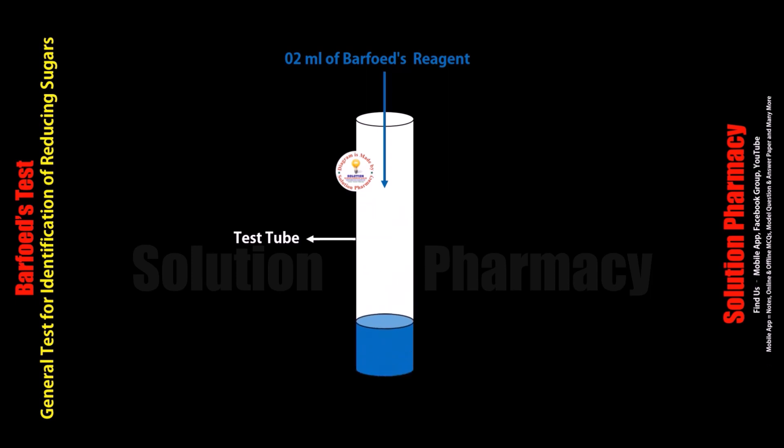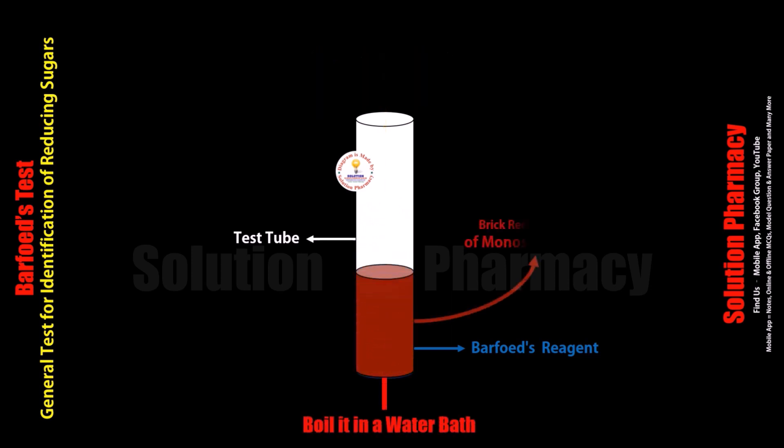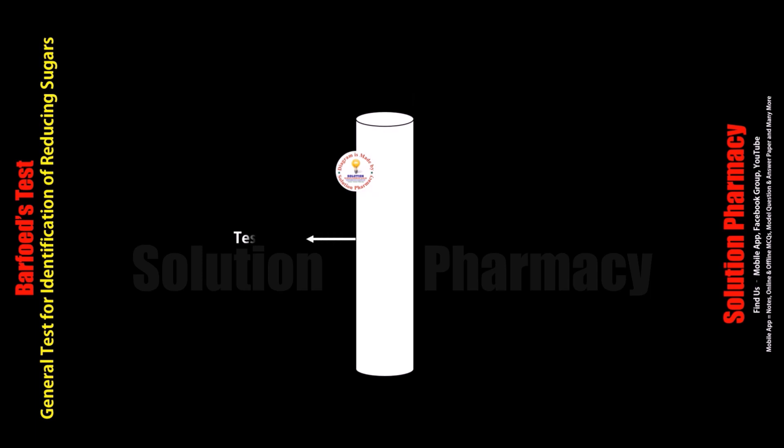This test detects reducing monosaccharides in our sample solution. This test is performed specifically to distinguish reducing monosaccharides from reducing disaccharides. We can simply detect the presence of reducing sugar in any sample.